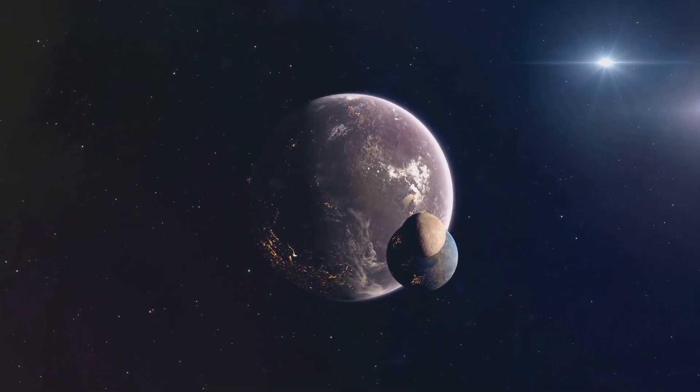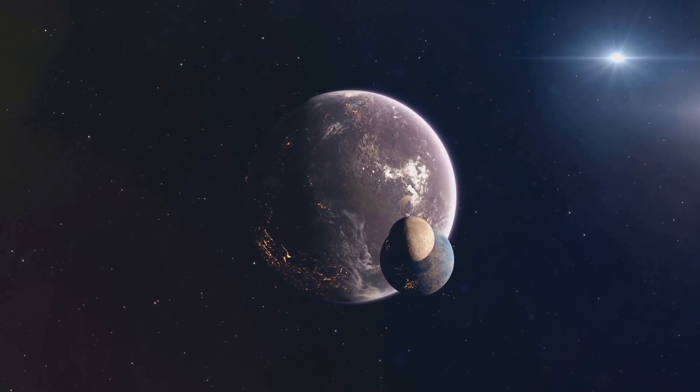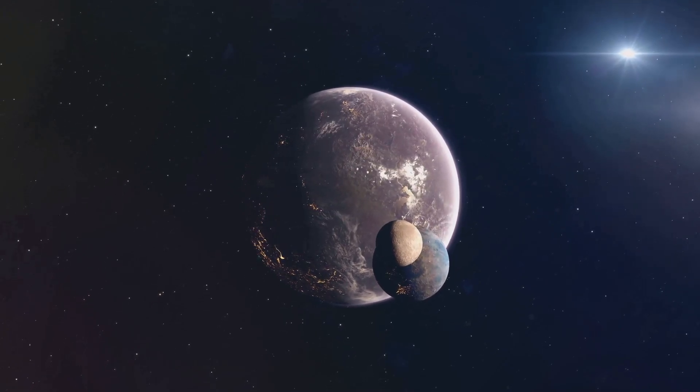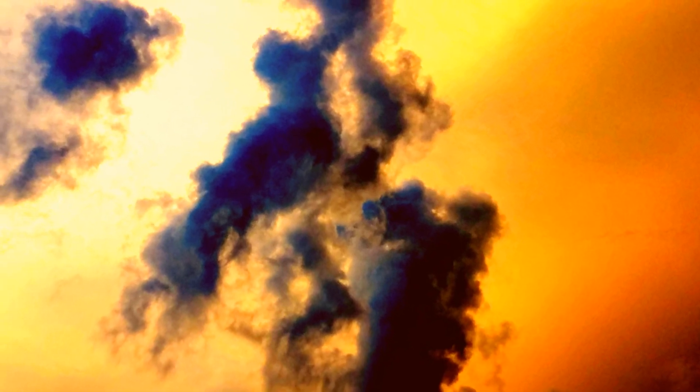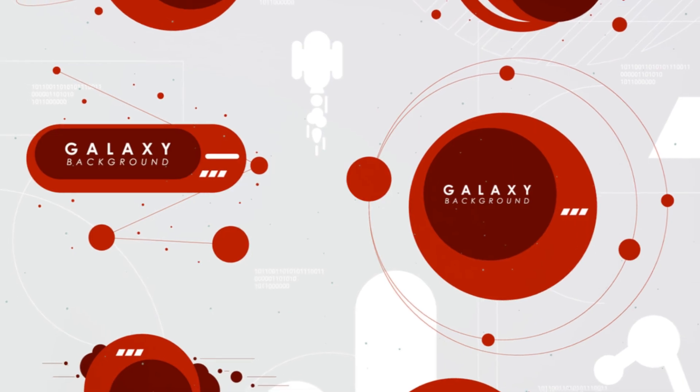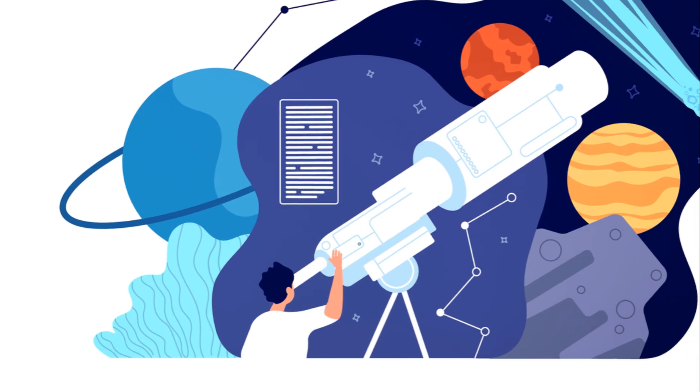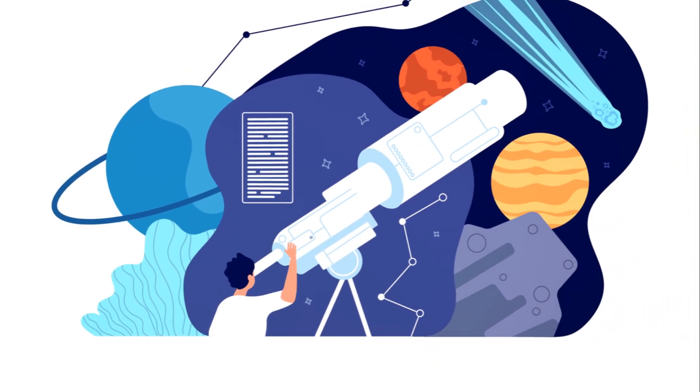Around this unassuming star orbits at least two planets, one of which, Proxima Centauri b, lies within the star's habitable zone. This zone, often referred to as the Goldilocks zone, is the region around a star where conditions might just be right for life as we know it. Could it be that our nearest stellar neighbor hosts life? That question, among others, is what drives our exploration of Proxima Centauri.